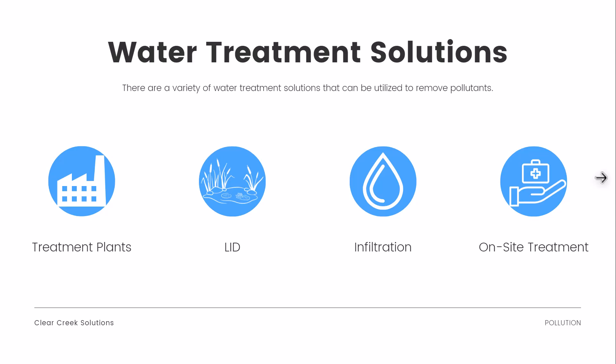So what are some potential water treatment solutions? There are a variety that can be utilized to remove pollutants. We have treatment plants, where water physically moves into these facilities, is treated using different chemicals or processes, and then released back into the environment. We also have LID, or low impact design, which are on-site stormwater solutions to help clean the water immediately after it rains. We have infiltration facilities, and on-site treatment using filter cartridges, which are constructed facilities that can treat the water as soon as it rains.